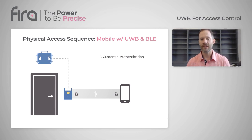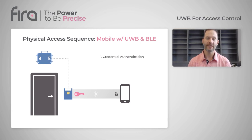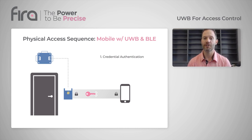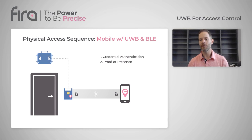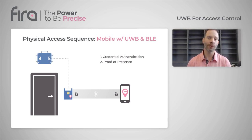Next, cryptographic keys are exchanged between the mobile device and the reader to establish a secured, fine-range, ultra-wideband session. It's at this point that we can determine proof of presence. We indeed know that the user is on the unsecure side of the opening, and now we're looking for intent to pass through the portal.